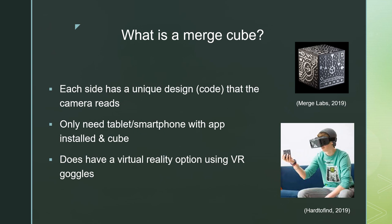The Merge Cube is like a trigger or a portal to digital information. Each side of the cube has a code, and your smart device uses the camera to detect and then read the code to know what information to project. To use it, all you need is a smart device with an app installed and the Merge Cube.